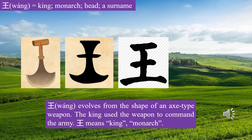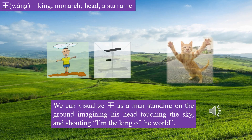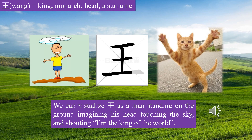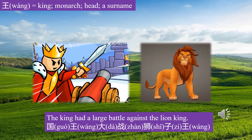Let's learn character Wáng (王). Wáng evolves from the shape of an axe-type weapon. The king used the weapon to command the army. Wáng means king. We can visualize Wáng as a man standing on the ground, imagining his head touching the sky, and shouting: I am the king of the world! The king had a large battle against the lion king. 国王大战狮子王。 Who would win?